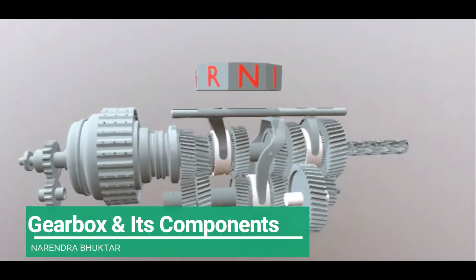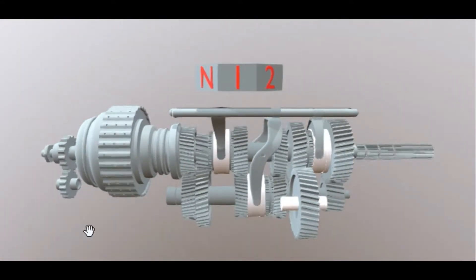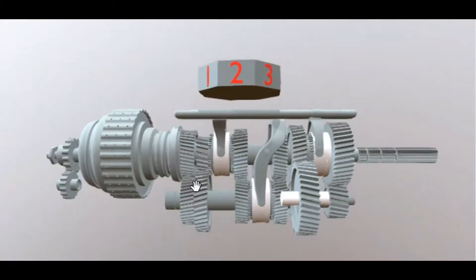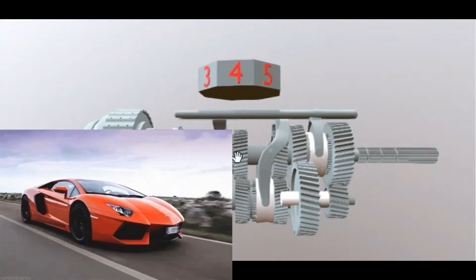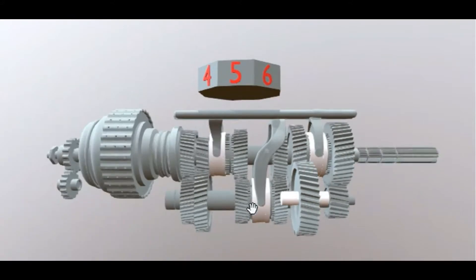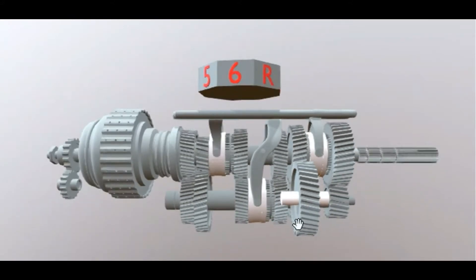Today we will learn about gearbox and its components. An automobile requires high torque when climbing hills and when starting, even though they are performed at low speeds. On other hand, when running at high speeds on level roads, high torque is not required because of momentum.